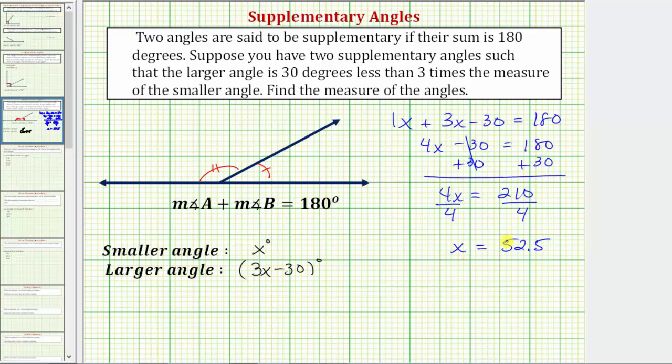So because x equals 52.5, we now know the smaller angle, and the larger angle has a measure of three times 52.5 minus 30 degrees.